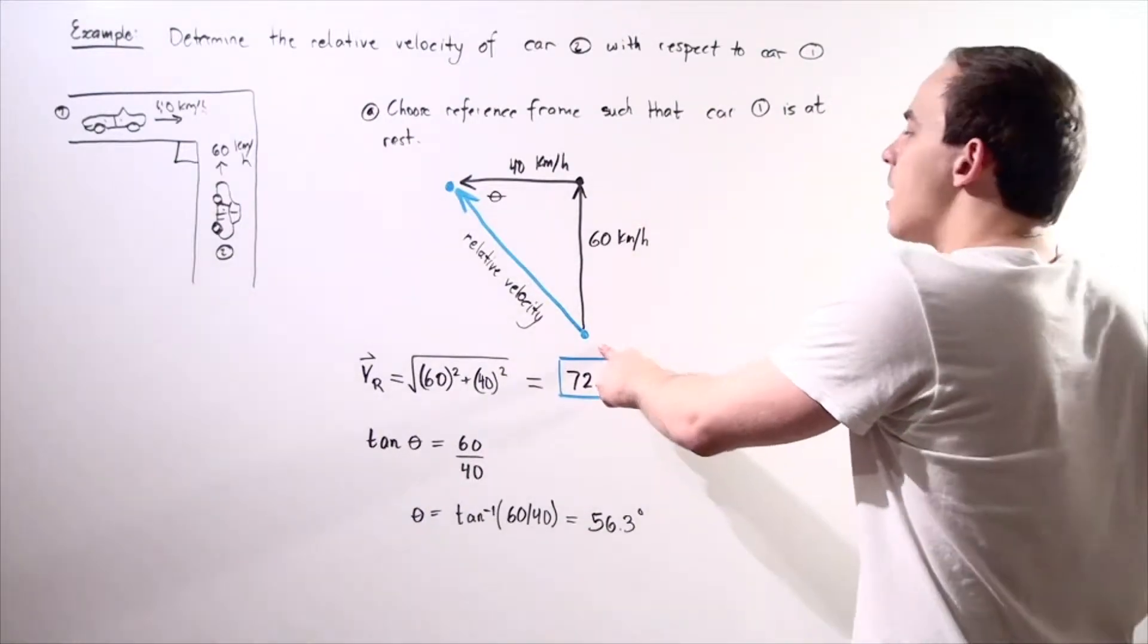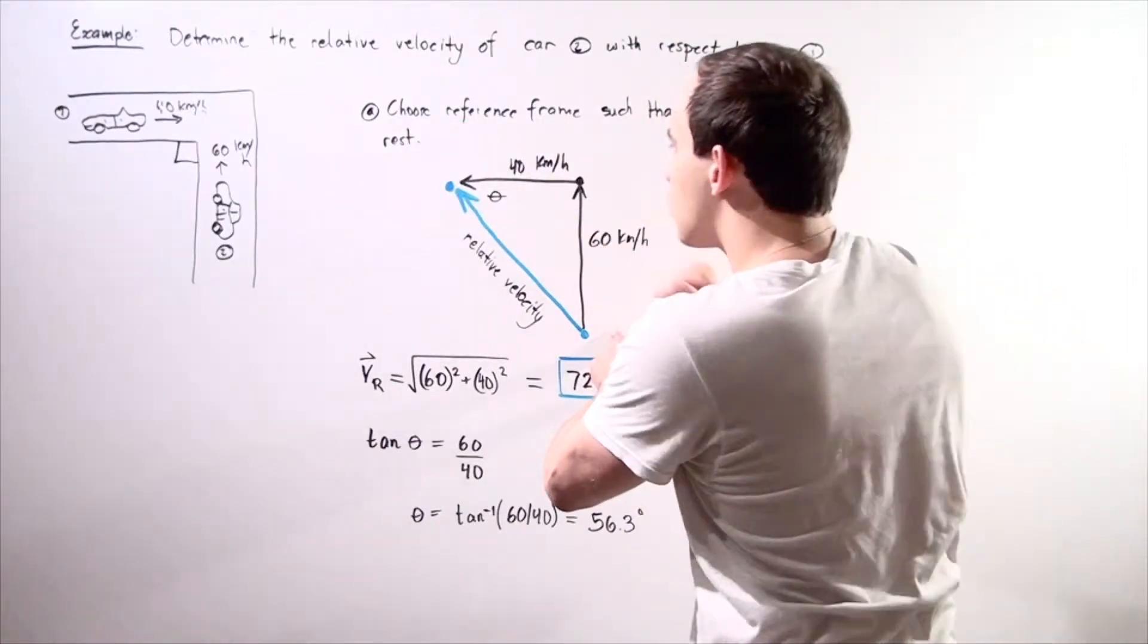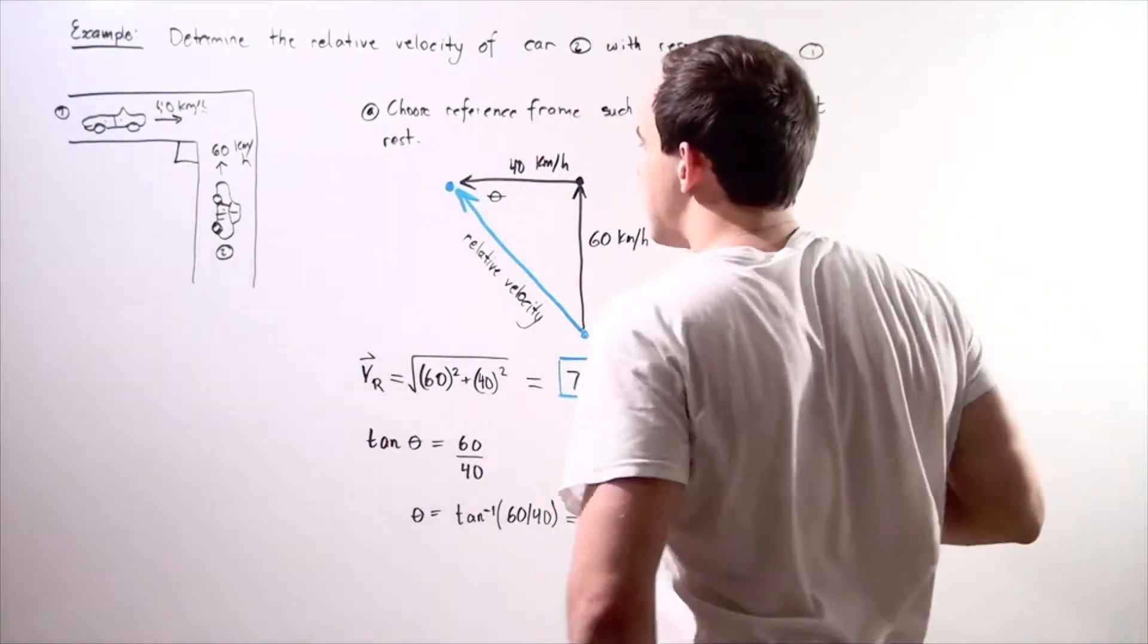So our vector going upward along the y-axis is 60 kilometers an hour and our vector going along the x-axis in the negative direction is 40 kilometers an hour.